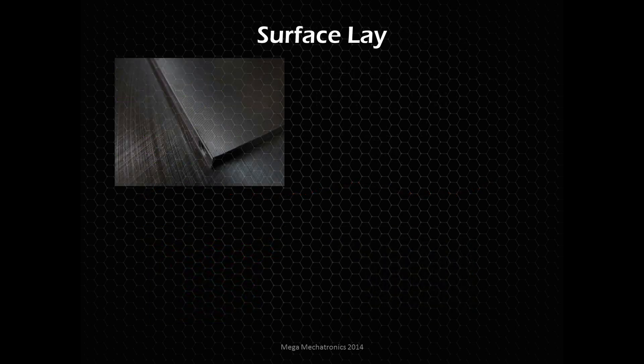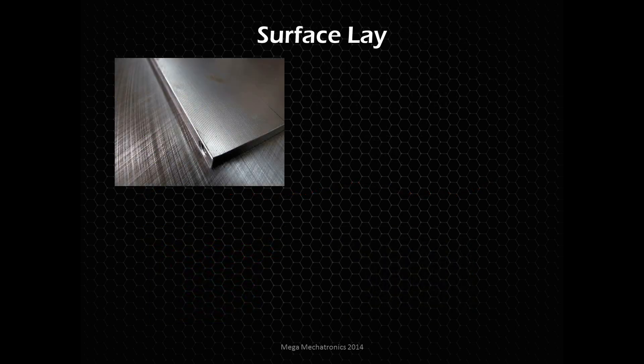Looking at surface lay, you can see there are actually a couple of different surface lays here. One is more of a sort of ground surface on the bottom, and then you see those really nice lines on that part sitting on top of that table. You can see those very straight, parallel lines — that's something probably CNC ball milled or a process like that. So those are pretty big waves.